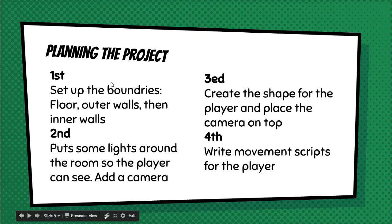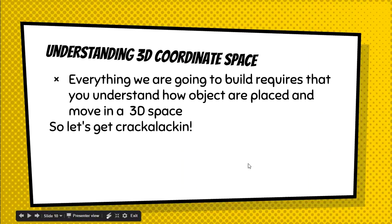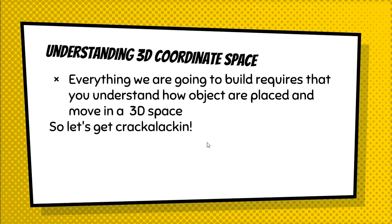We should plan the project. It's a little bit challenging and tricky, so we've got to do some planning. Here's what we're going to do: set up the boundaries, floors, and walls; add some lights; create a shape for the player and put a camera on his head. Then we're going to write some scripts to make him look around with the mouse and move with the arrow keys.